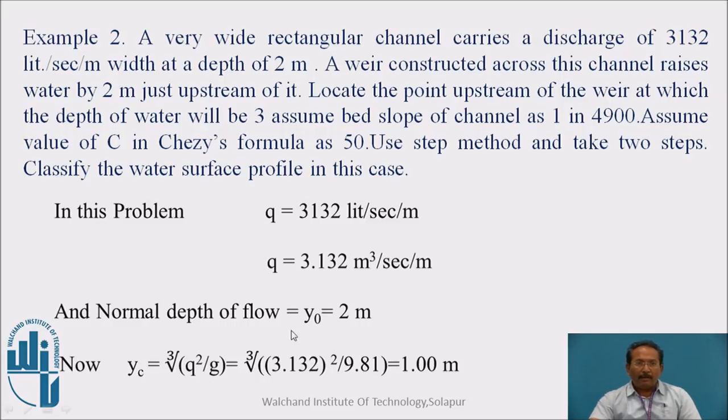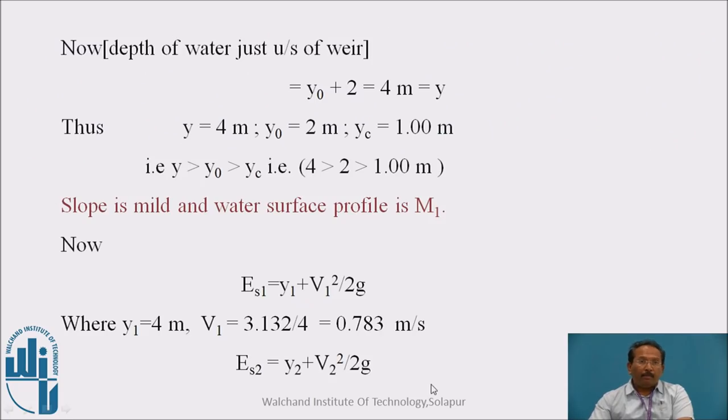Y0 is given to us 2 meter. And now as we know yc is calculated from the Froude's number, yc equals cube root of q square upon g, we will get yc as 1 meter. Now depth of water just upstream of it rises by 2 meter, y0 plus 2, which is 4 meter, that is y. So y is 4 meter, y0 is 2 meter and yc is 1 meter. So y is greater than y0 which is greater than 1. I told you in the previous example also, the same situation was there. 4 is greater than 2 is greater than 1, which is an M1 type of profile and mild slope.